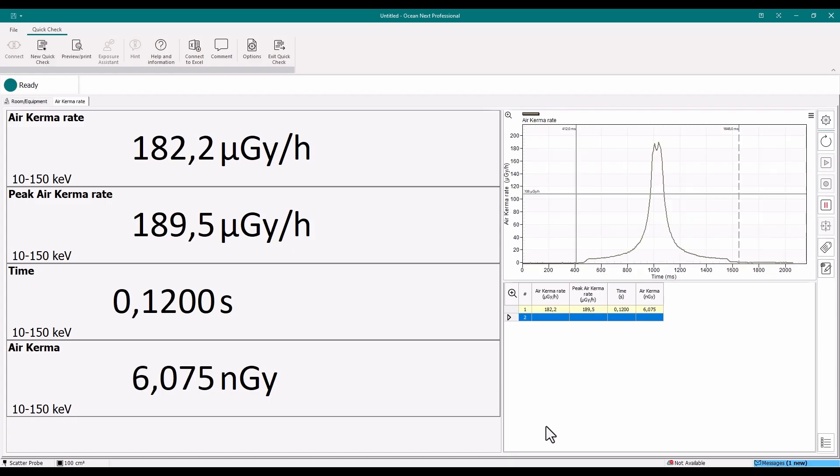On the display device the scatter probe will automatically trigger on detecting scattered x-ray and displays values immediately.